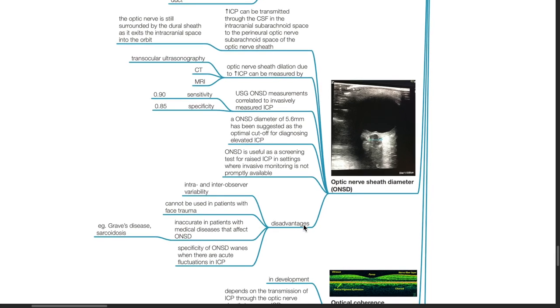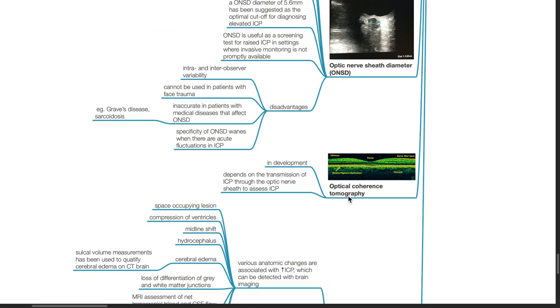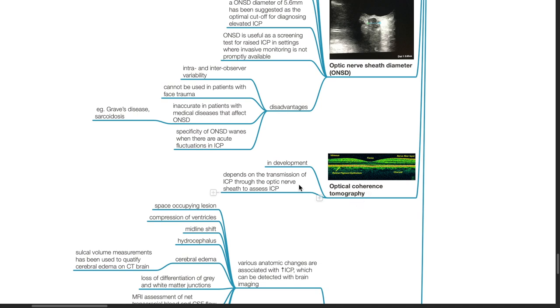Disadvantages: intra and inter-observer variability. It cannot be used in patients with face trauma. It is inaccurate in patients with medical diseases that affect the optic nerve sheath diameter, such as Graves' disease and sarcoidosis. Specificity of ONSD wanes when there are acute fluctuations in ICP. Optical coherence tomography is a technology in development. It depends on the transmission of ICP through the optic nerve sheath to assess ICP.